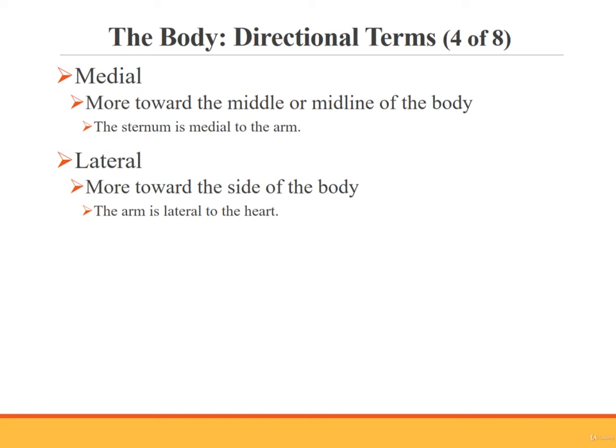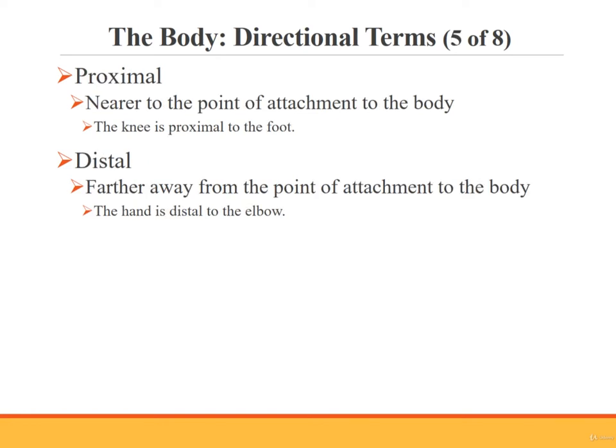Medial means more toward the middle or midline of the body — for example, the sternum is medial to the arm. Lateral means more toward the side — for example, the arms are lateral to the heart. Proximal means located nearer to the point of attachment to the body — for example, the knee is proximal to the foot. Distal means located farther from the point of attachment — for example, the hand is distal to the elbow.